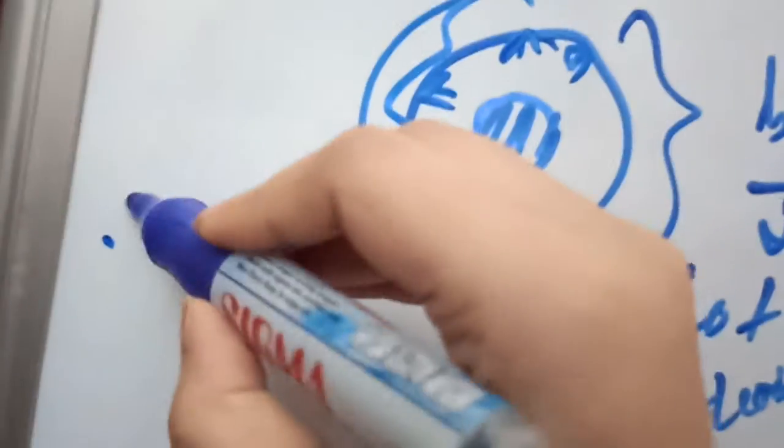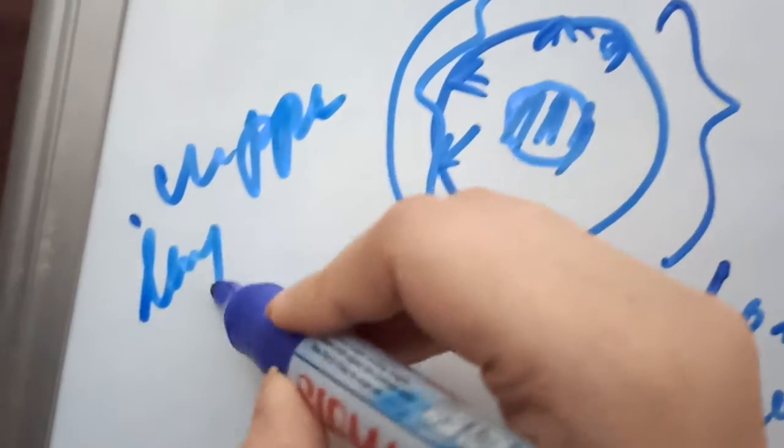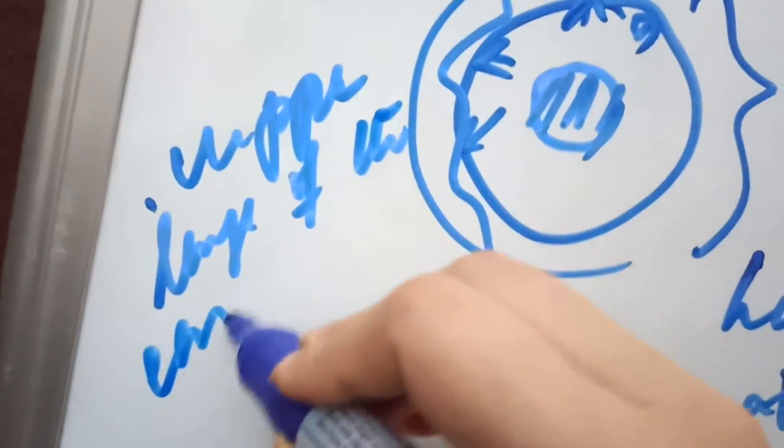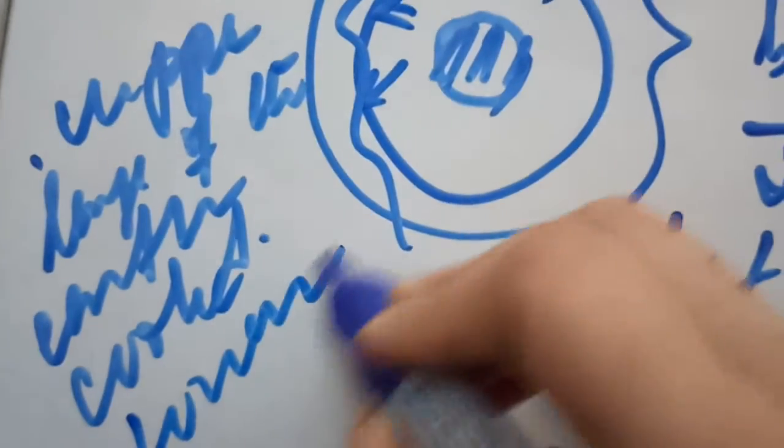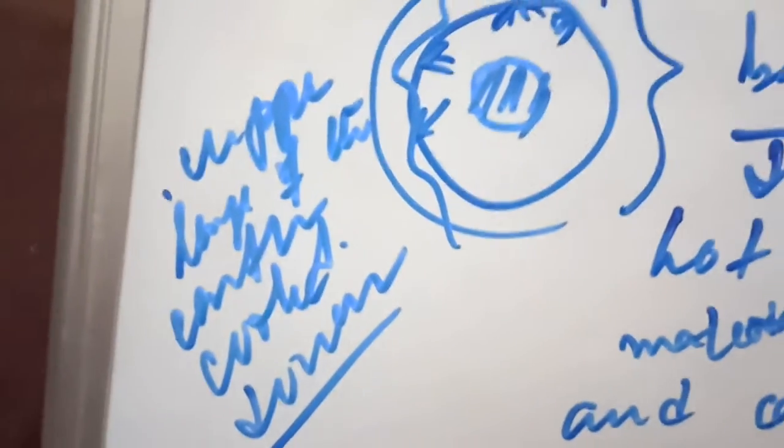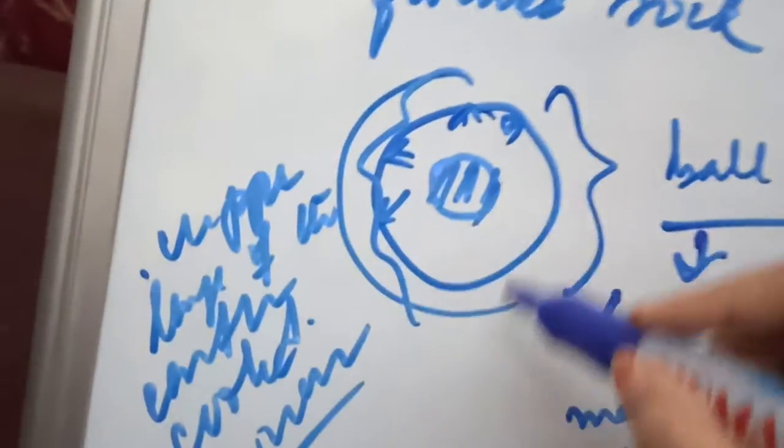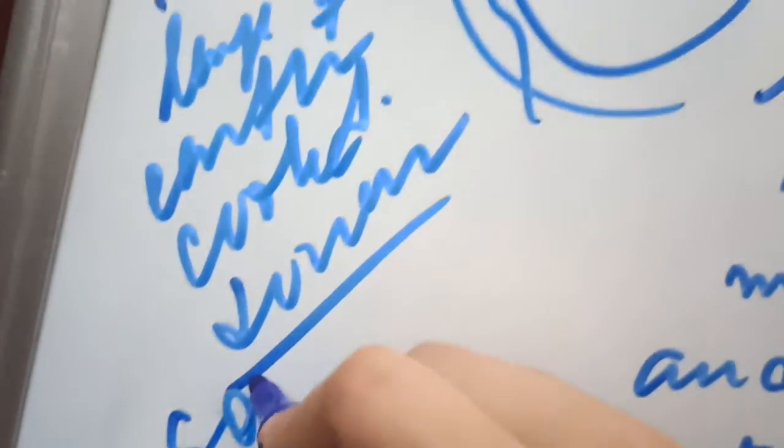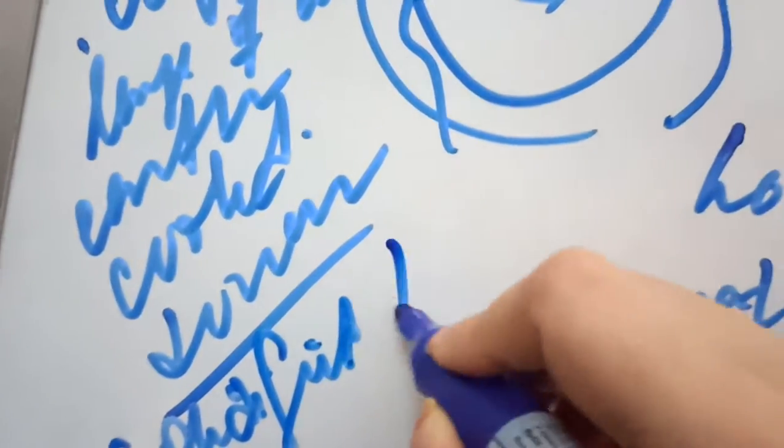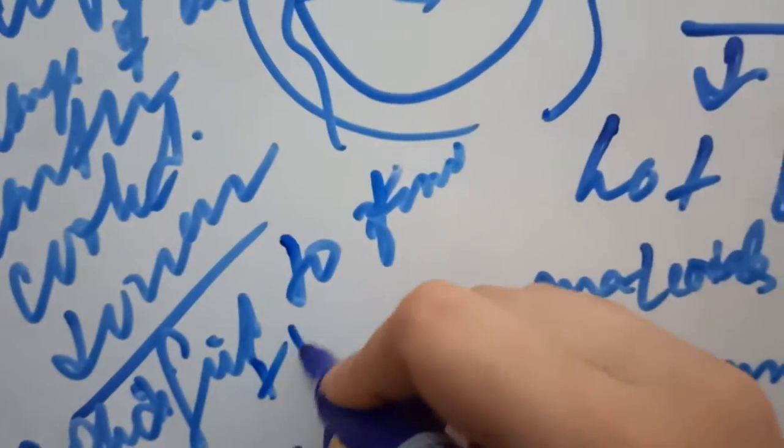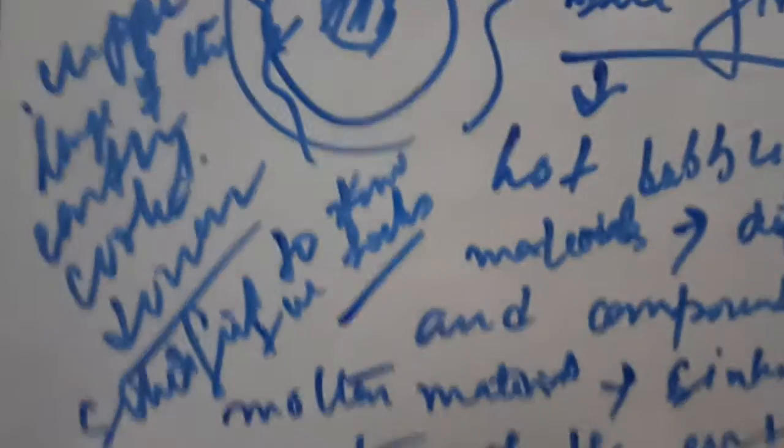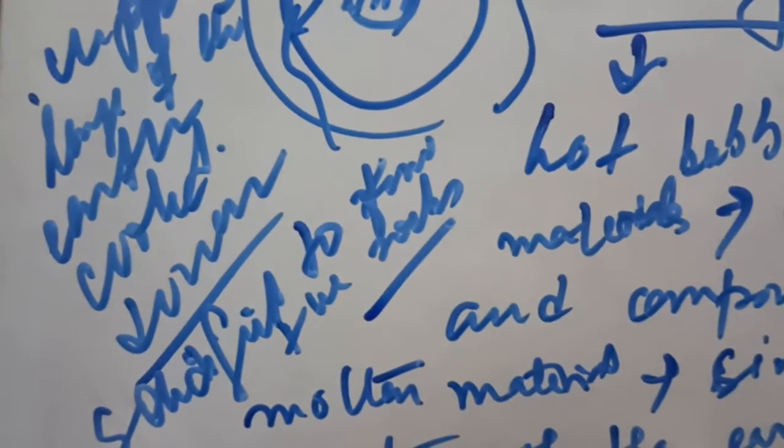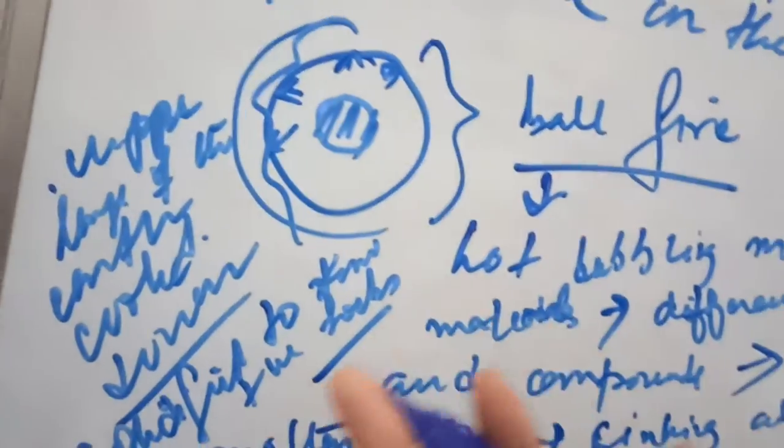this upper layer of the earth cooled down because of the temperature difference, and the molten volatile materials that are present there solidified to form the rocks, which is known as the igneous rock.